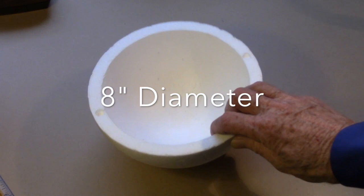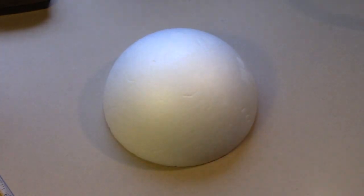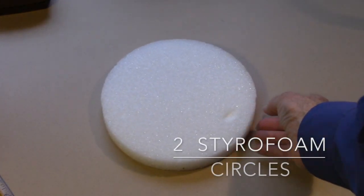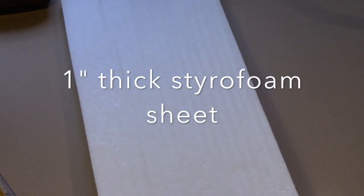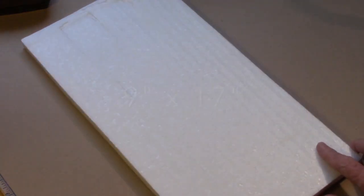To get the Styrofoam ball you can go to Walmart or Michael's or even Joann's. It's the same thing for these Styrofoam circles. And use this Styrofoam sheet to make legs for R2D2.